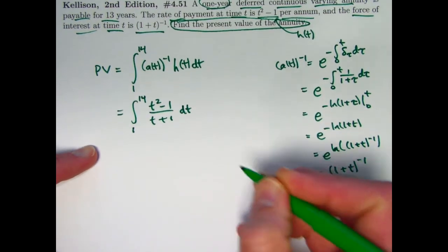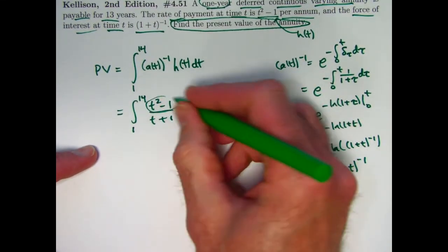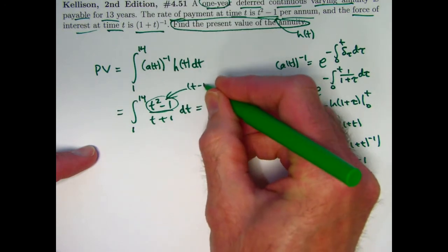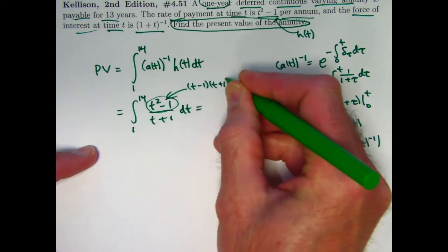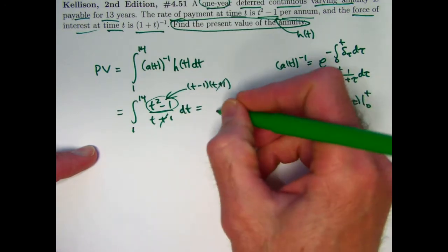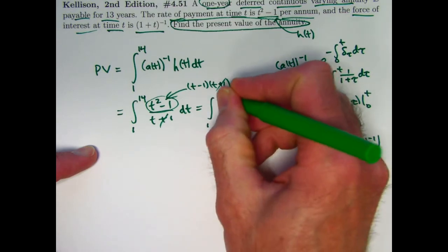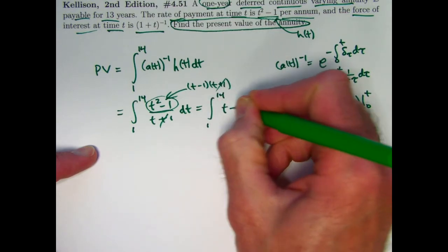And this is easier than it looks. The top can factor as t minus 1 times t plus 1. The t plus 1 can cancel with the one on the bottom. You get the integral from 1 to 14 of t minus 1.